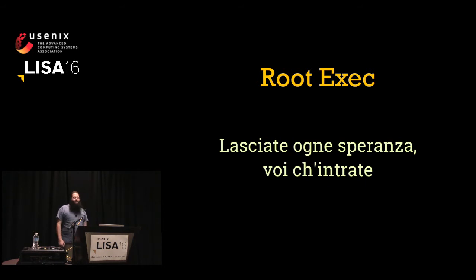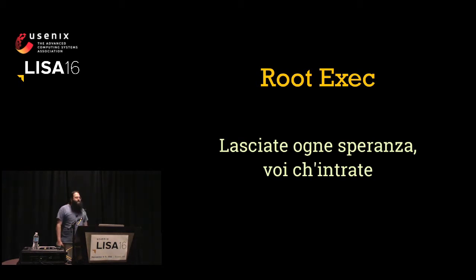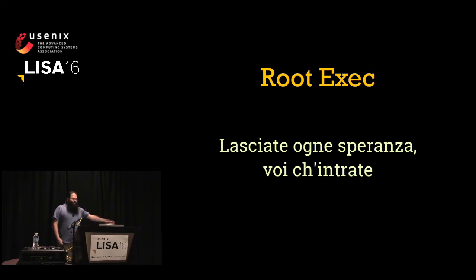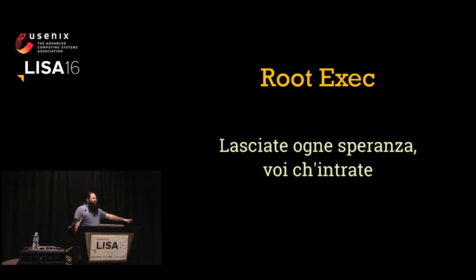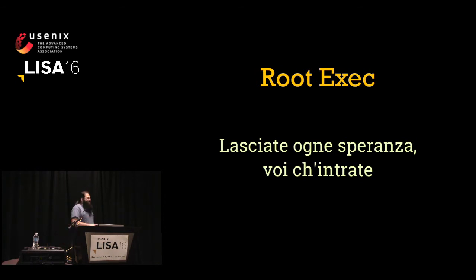If they can run code as root, you've reached game over in most cases, with the exception of principle of least access. If that machine does not have access to a secret, they're not getting it. If people tell you Docker or VMs can keep you safe, they're probably lying. If somebody is running as root, assume every secret on the box is compromised and has to be rotated. This is also where audit logging gets really important — you want to see exactly what was accessed so you know what to rotate.